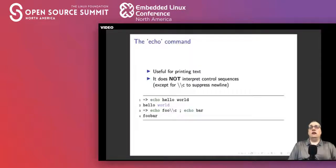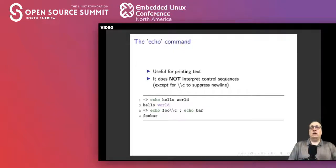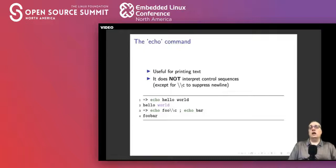Let's look at the echo command. Just like any shell, echo allows you to output text. Unlike the Bourne shell, it does not support control sequences. The only one it supports is backslash-c, which suppresses a new line. For example, if you echo 'foo' with backslash-c and then echo 'bar', it will push them together as 'foobar' by suppressing that new line.